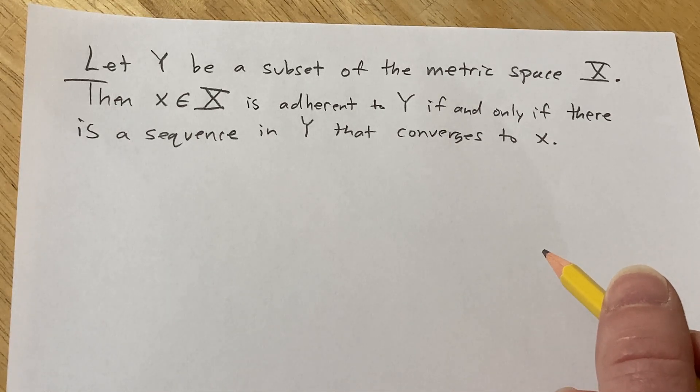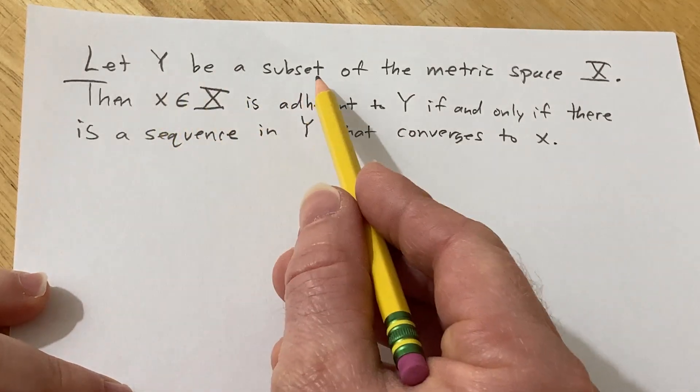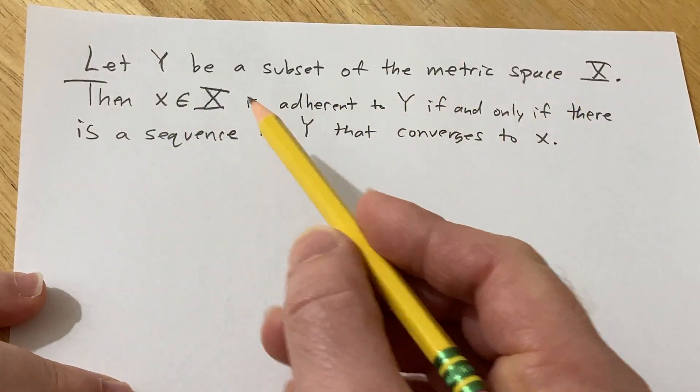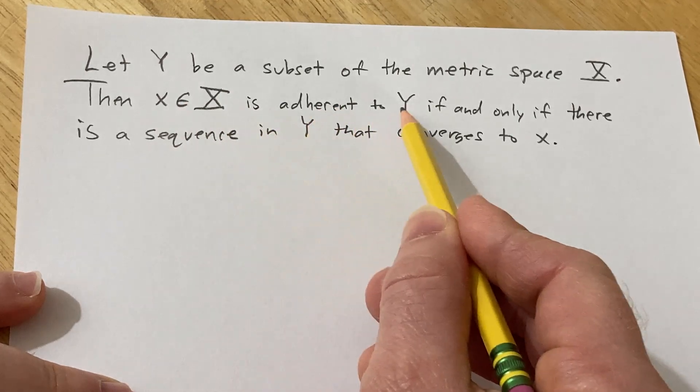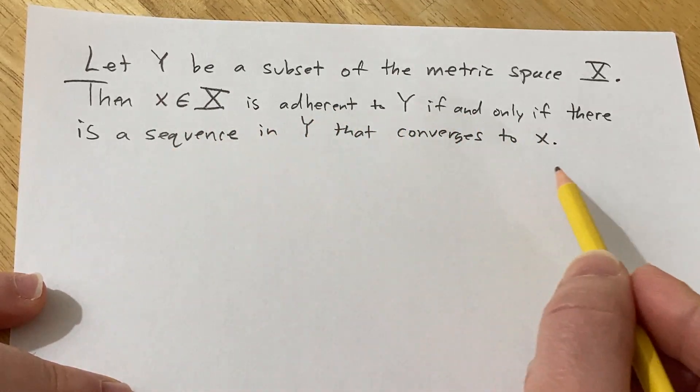Hello, in this video we're going to give a proof. So the statement is the following: let Y be a subset of the metric space capital X. Then x in capital X is adherent to Y if and only if there is a sequence in Y that converges to x.